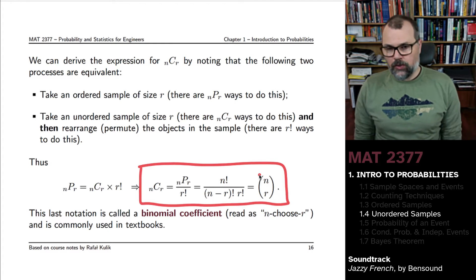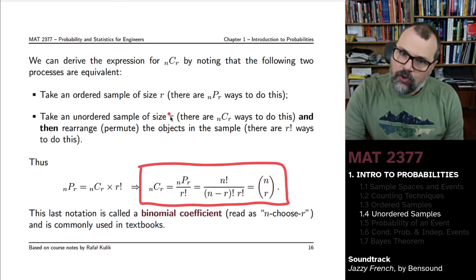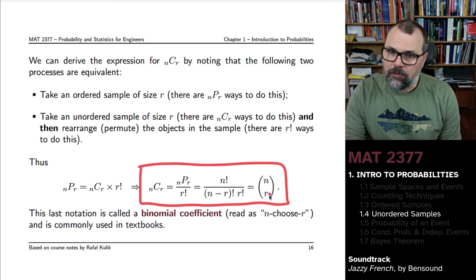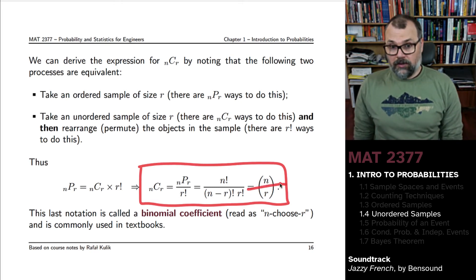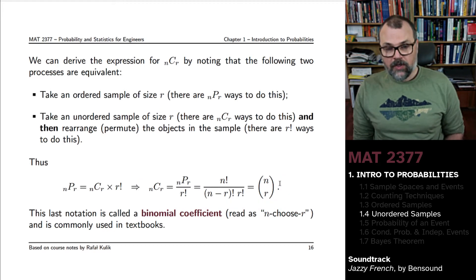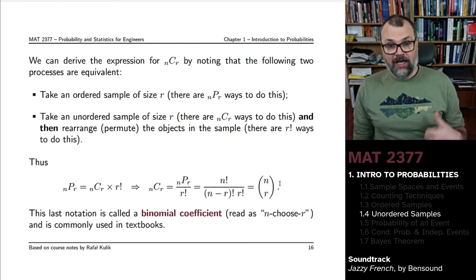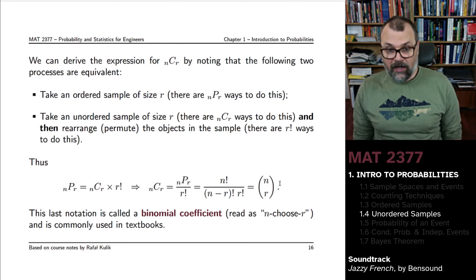We call that n choose r. And that's usually the notation that is used in textbooks. So whenever you see n choose r, what looks to be like a fraction but without a dividing line, you'll remember that this stands for n factorial divided by n minus r factorial divided by r factorial.